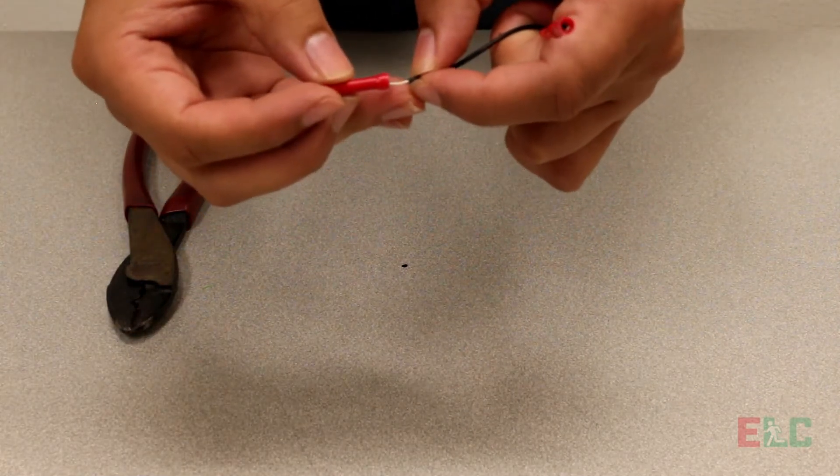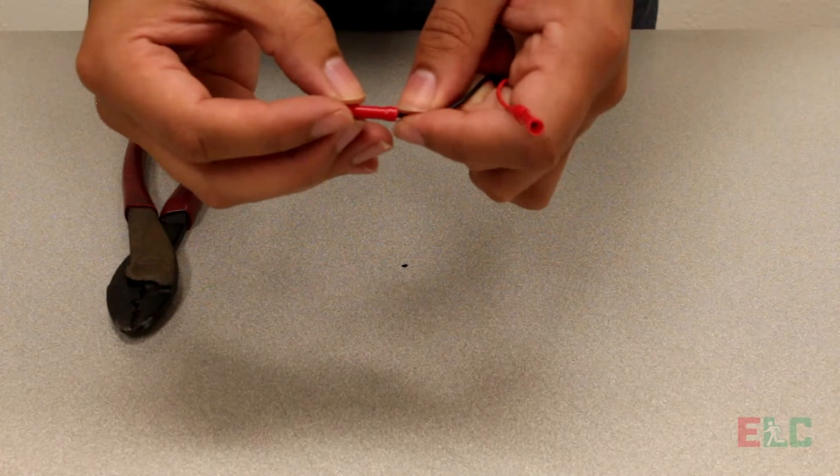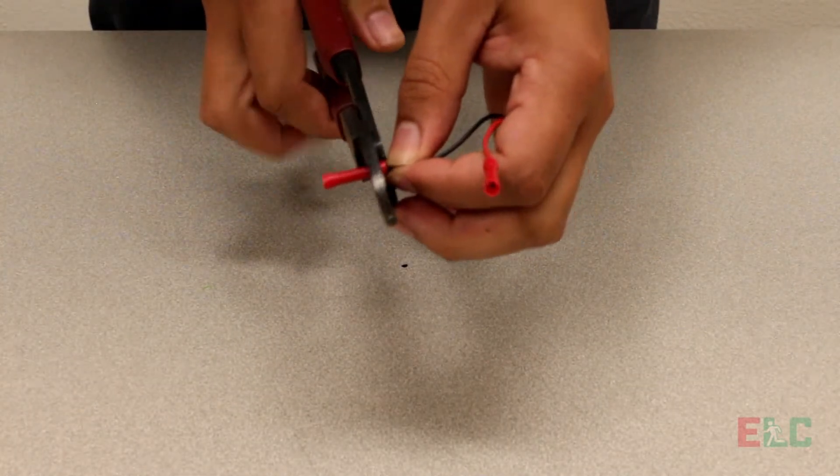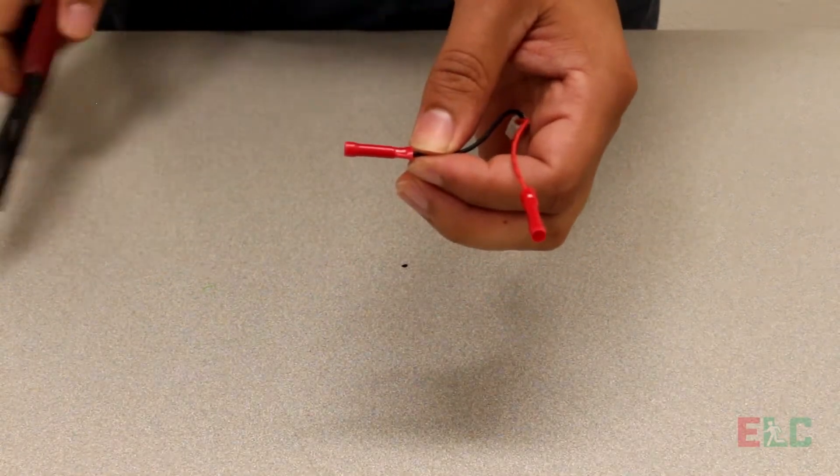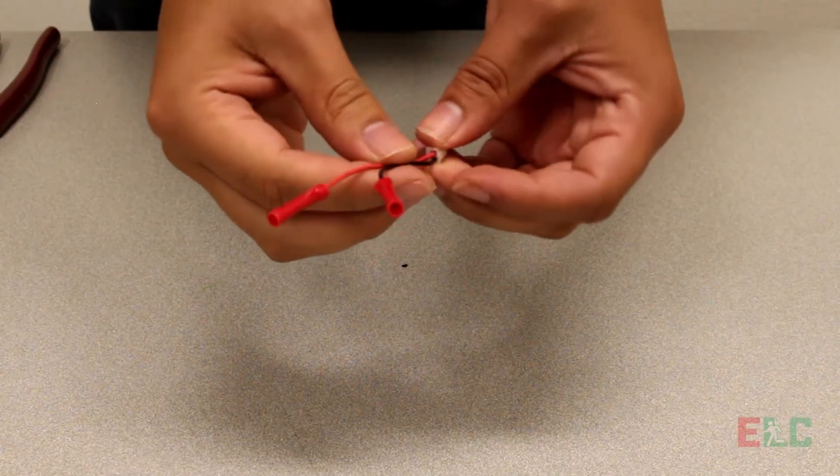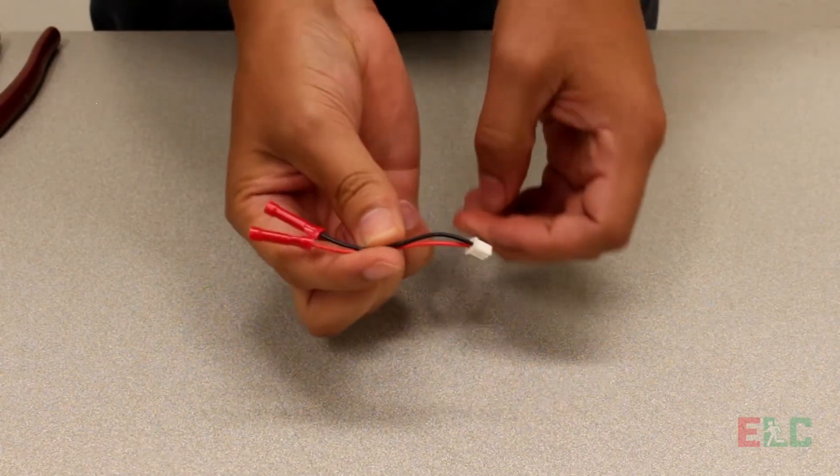Repeat the same step for the second wire. Now the connector side is ready.